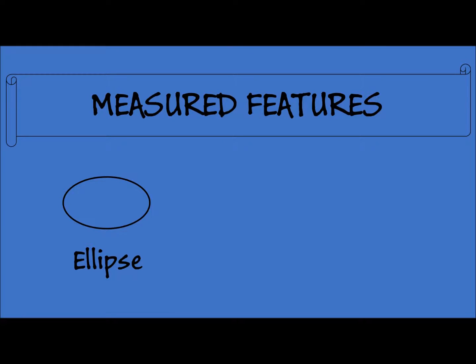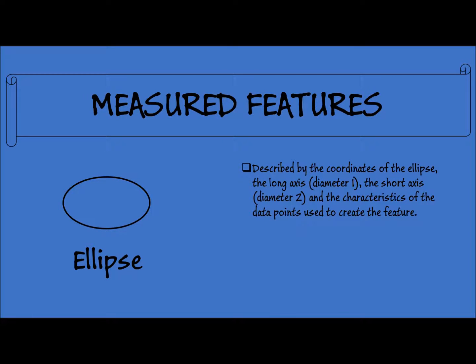Fourth, we have the ellipse feature. An ellipse is described by the coordinates of the ellipse, the long axis also known as diameter 1, the short axis also known as diameter 2, as well as the characteristics of the data points used to create the feature. At a minimum, five data points on the same plane are needed to define the ellipse feature.